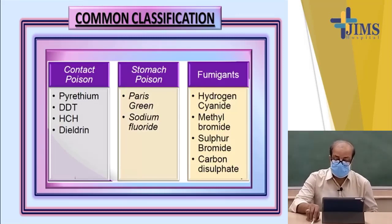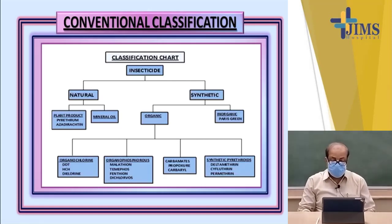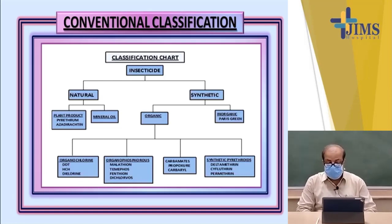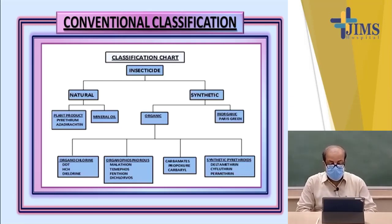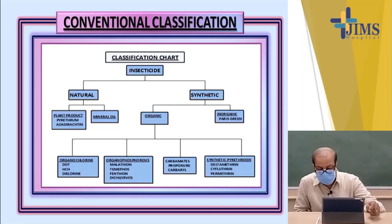Fumigants are mainly used as rodenticides, or to kill rats. The conventional classification includes natural and synthetic variants. In the natural variant, there are certain plant products like pyrethrum and mineral oils. In the synthetic variant, there are organic and inorganic compounds. In the organic group, you have organochlorine compounds, organophosphorus compounds, the carbamate group, and also certain other kinds of insecticides.